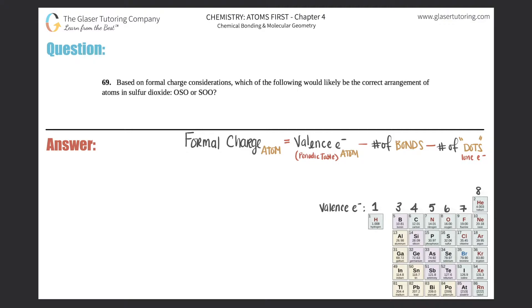Number 69. Based on formal charge considerations, which of the following would likely be the correct arrangement of atoms in sulfur dioxide? Would it be OSO or SOO?